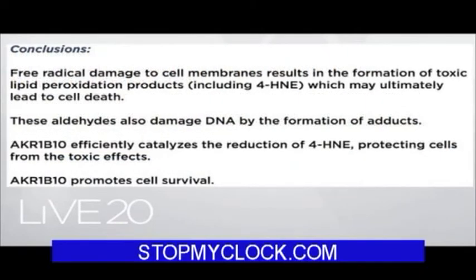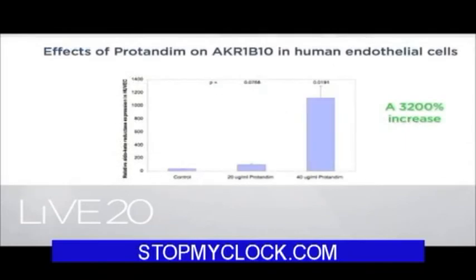Carbonyls are related to TBARS — lipid peroxidation products. The conclusions of these two papers: this gene responds to free radical damage resulting in formation of toxic lipid peroxidation products, specifically 4-hydroxynonenal (4-HNE), which may ultimately lead to cell death. These aldehydes damage the DNA and can cause mutations. The gene product efficiently catalyzes the reduction of 4-HNE, protecting cells from toxic effects. What does protandim do to this gene? The control is on the left, and at two concentrations of protandim, there is a 3,200% — a 32-fold — increase in the production of this gene product. The more of this you have, the more protected you are.